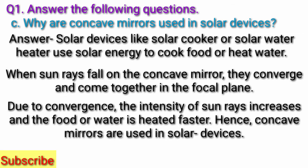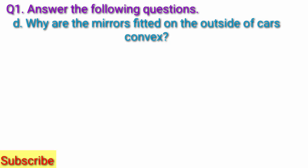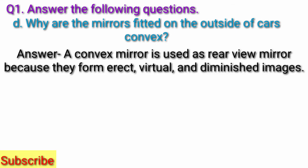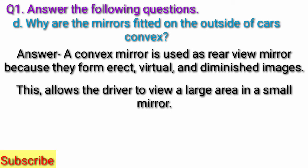Question D: Why are the mirrors fitted on the outside of cars convex? Answer: A convex mirror is used as a rear view mirror because they form erect, virtual and diminished images. This allows the driver to view a large area in a small mirror.